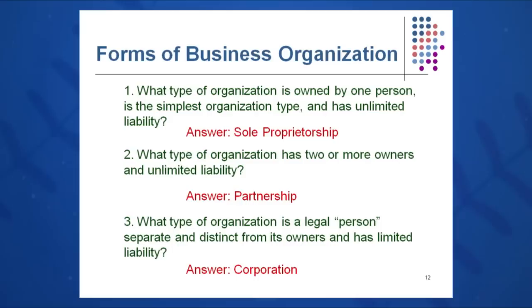Two, what type of organization has two or more owners and unlimited liability? It's your partnership. You may have formed a partnership with a friend or colleague. And third, what type of organization is a legal person separate and distinct from its owners and has limited liability? This is a corporation. So these are the three key types.